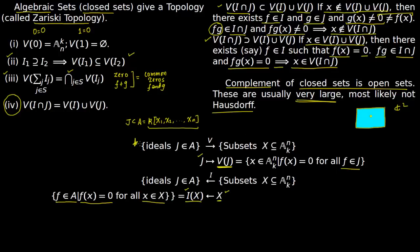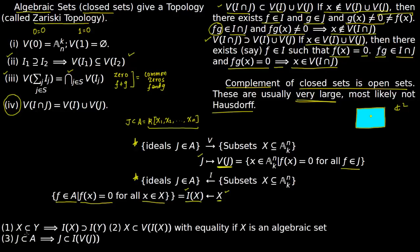The first property of this correspondence: if X is a subset of Y, this implies I(X) contains I(Y). If X is a smaller set, more polynomials are likely to vanish on it. All polynomials which vanish on the bigger set Y will also vanish on X, since Y contains X. And since X is smaller, there may be additional polynomials vanishing on X that do not vanish on Y, so I(X) ⊇ I(Y).